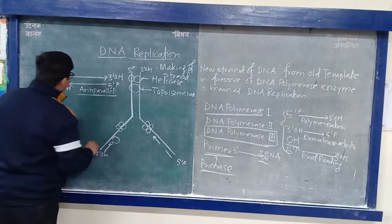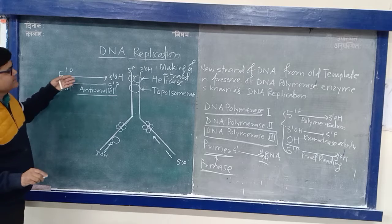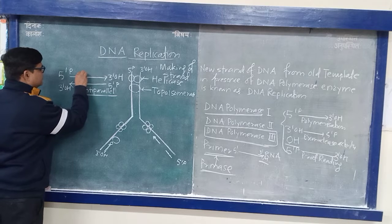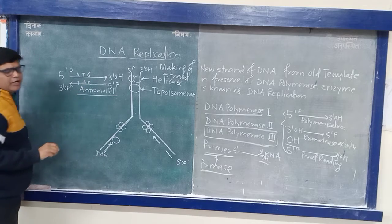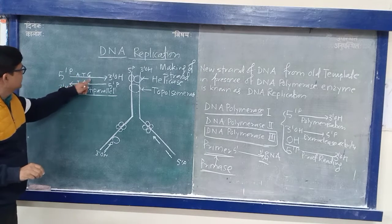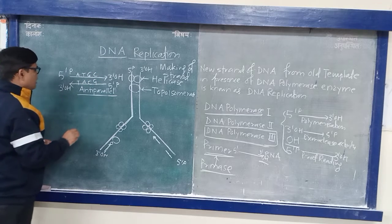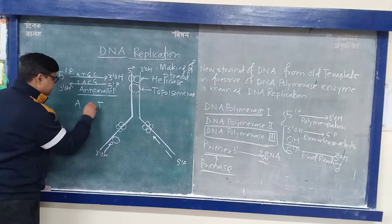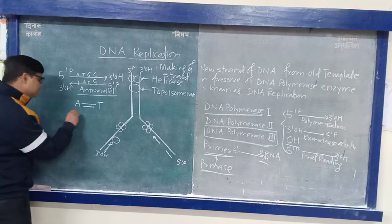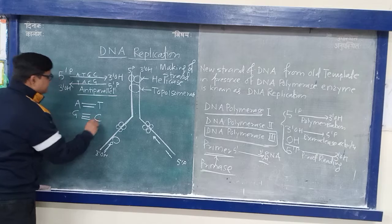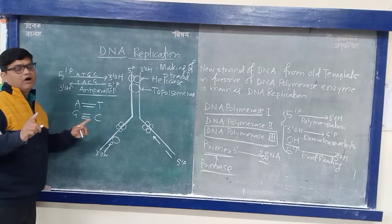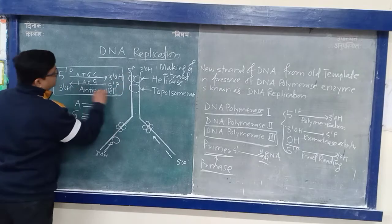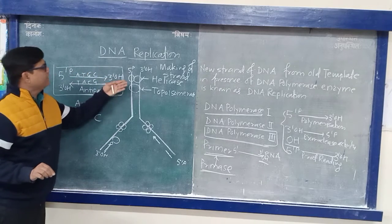Due to the presence of this antiparallel arrangement, DNA is highly stable, because there is hydrogen bonding between the nitrogenous bases. Between A and T there are two hydrogen bonds, and between G and C there are three hydrogen bonds. Collectively, all the hydrogen bonds make DNA highly stable.